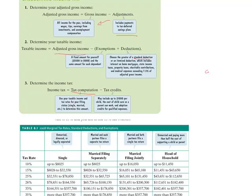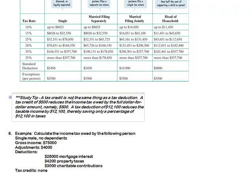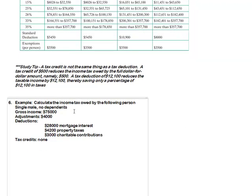Here's a sample tax table to help us work some problems. A tax credit is not the same as a tax deduction. A tax credit of $500 reduces the income tax owed by the full $500. But a tax deduction of $12,100 just reduces your taxable income. So there's an important difference between a tax deduction and a tax credit. Our situation: a single male with no dependents, gross income of $75,000, adjustment of $4,000 going into retirement, mortgage interest deduction, property taxes, and $3,000 in charitable contributions, and no tax credit.